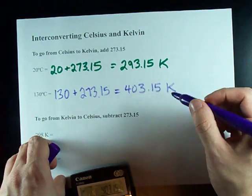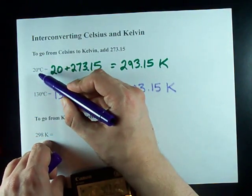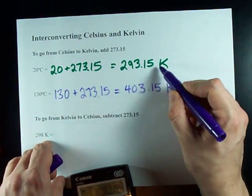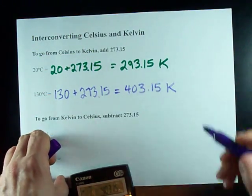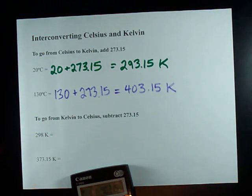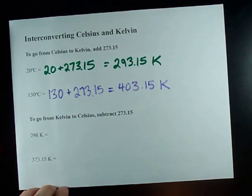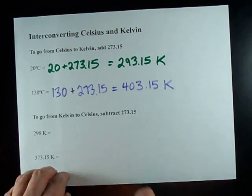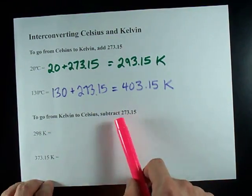Now, note for 100% accuracy, the units here are degrees Celsius and these are just Kelvins. There's no degree symbol when you're using the Kelvins. Anyways, the real question you have is how do I convert from Kelvin to Celsius? And the answer to that is simply the opposite.